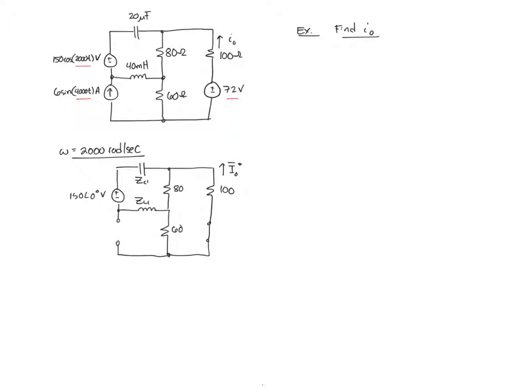The frequency domain equivalent of the circuit at 2000 radians per second is shown as follows. We need to find the equivalent impedance of the capacitor, which is 1/(jω₁C). So 1/(j·2000·20μ), that's going to be -j25 ohms. And likewise for the equivalent impedance of the inductor, jωL, that will equate to positive j800 ohms.